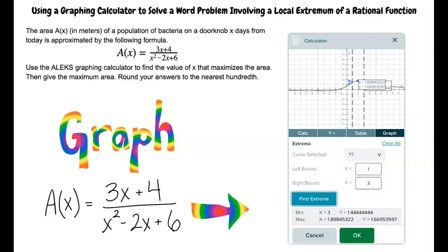So would the value of x that maximizes the area be 1.90 after rounding to the nearest hundredth? Yes. The maximum area is the corresponding y value of the maximum. This means that the maximum area is about 1.67 meters.